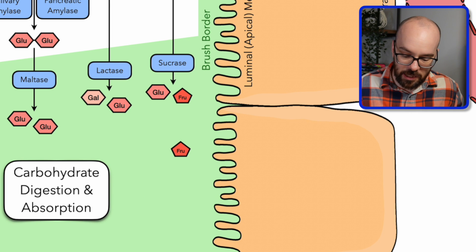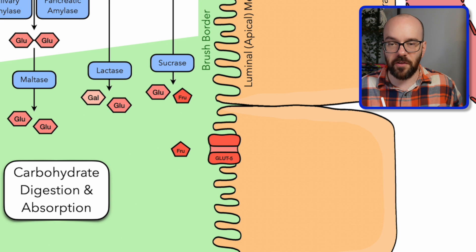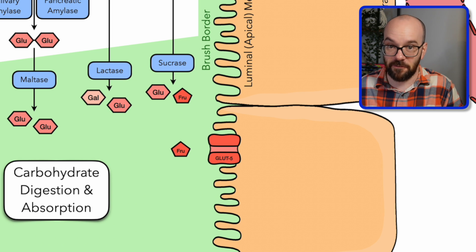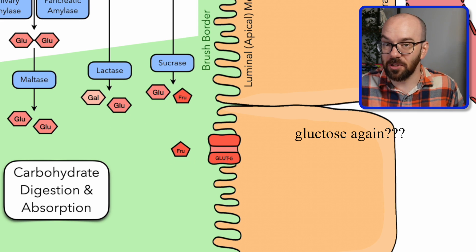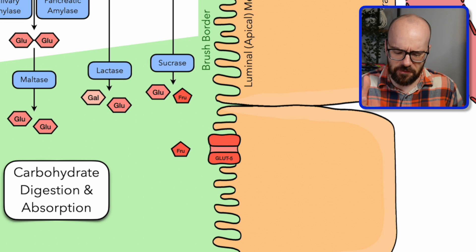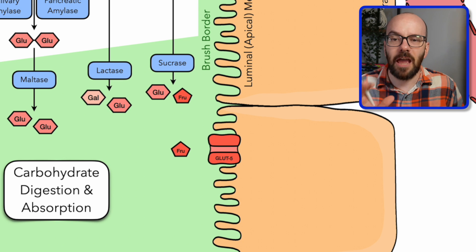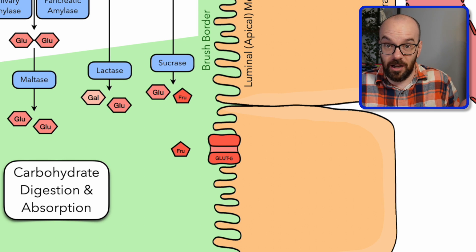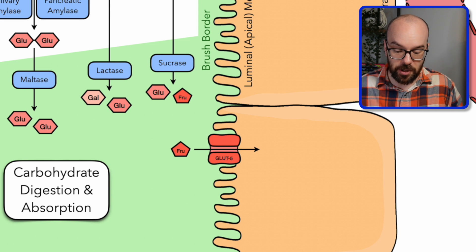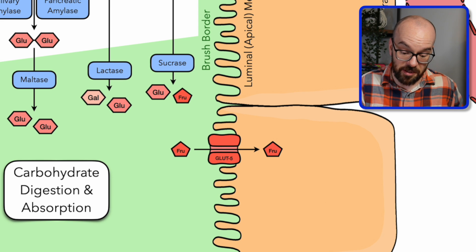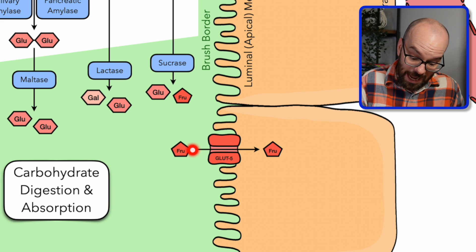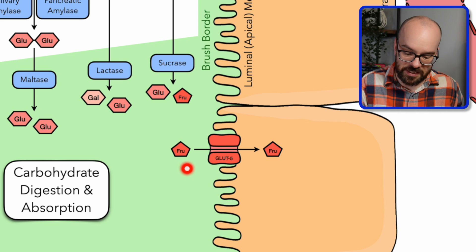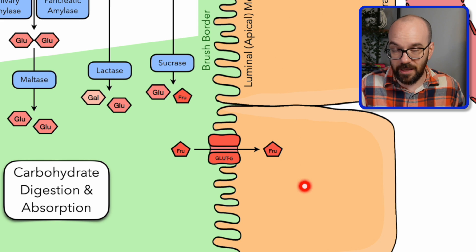Let's start with fructose. Fructose enters through a special transporter called GLUT5, which stands for glucose transporter 5 — a somewhat misleading name since this transporter brings in fructose, not glucose. The '5' likely refers to it being the fifth one discovered by scientists. Fructose enters through GLUT5 by facilitated diffusion, meaning it passes through a special protein channel via passive transport. Because there's much more fructose in the lumen than in any given enterocyte, there is a net movement of fructose into the enterocytes.